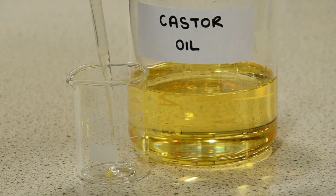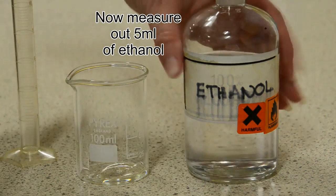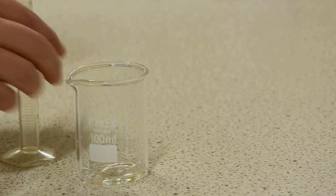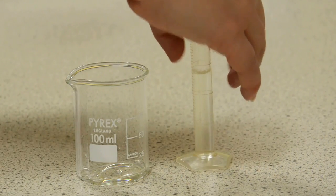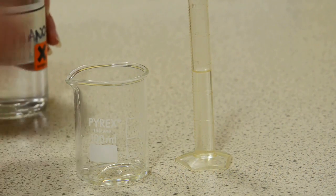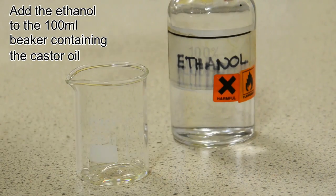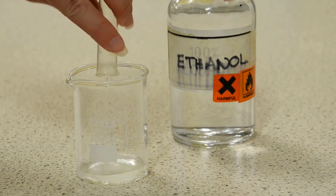To that I'm going to add five milliliters of ethanol to help the castor oil to dissolve better, because oil and water don't mix and the alkaline solution I'm going to be adding later on is essentially water. So this ethanol is going to help the castor to dissolve.